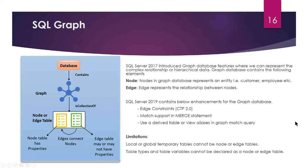SQL Graph is not entirely new — in SQL Server 2017 the graph database feature was introduced to represent complex relationships or hierarchical data. A graph database contains nodes and edges. Nodes represent entities such as customers or employees, while edges represent relationships such as primary key/foreign key associations.